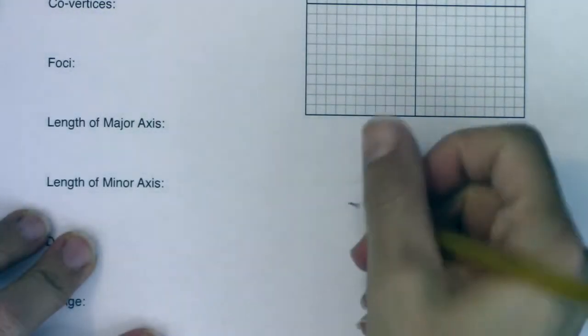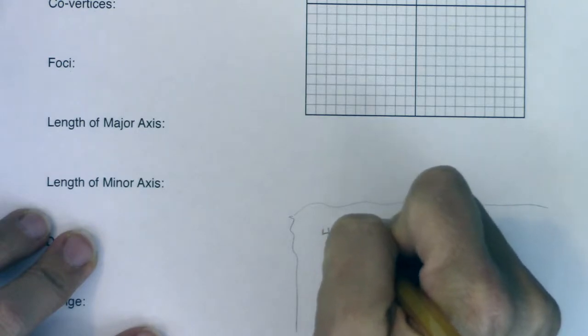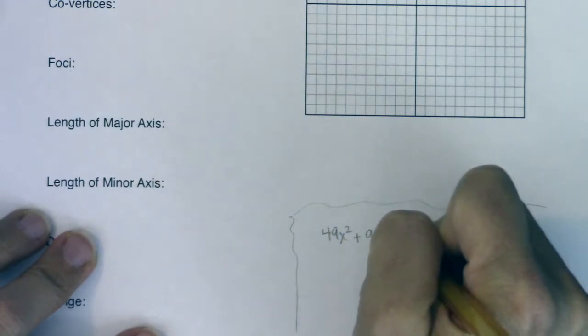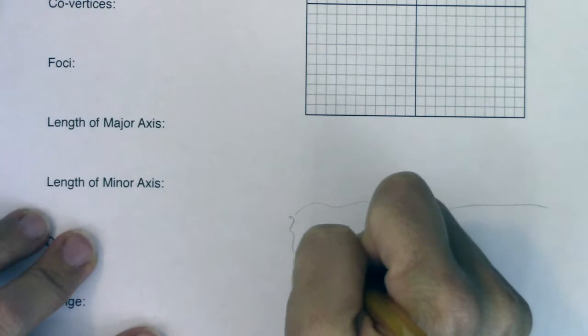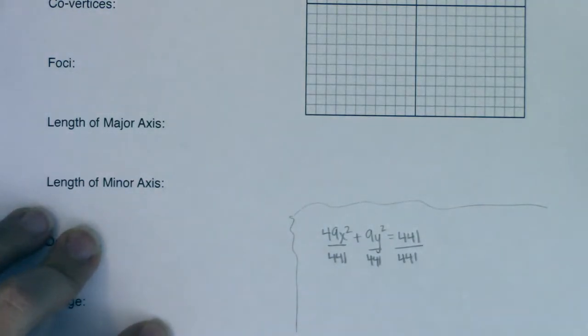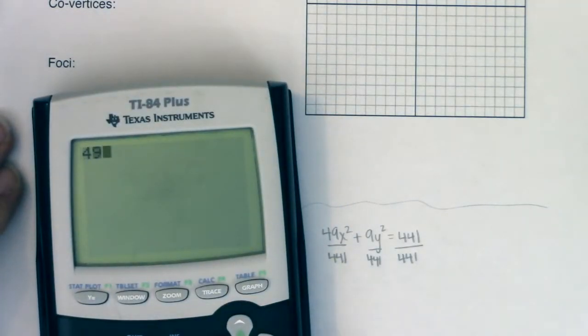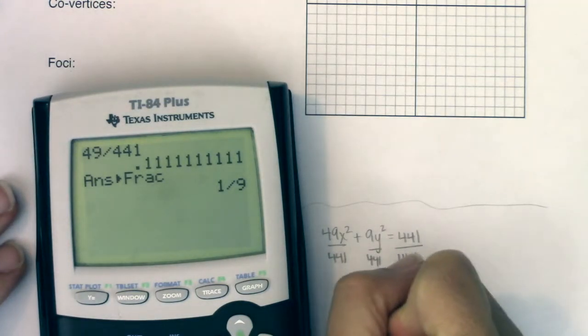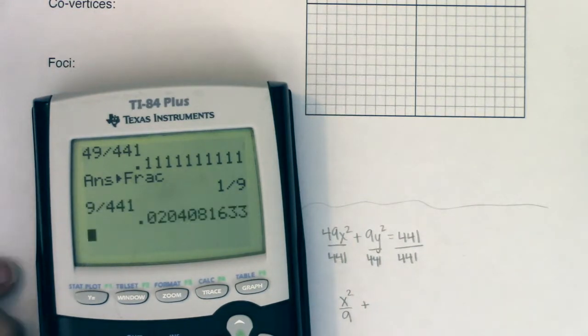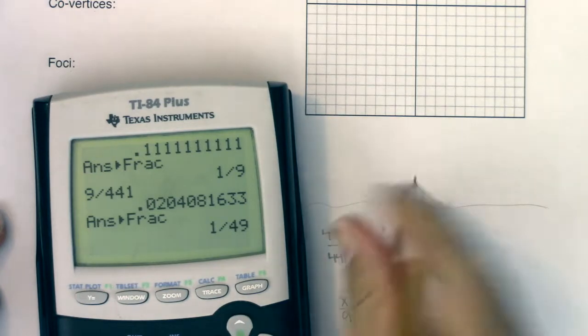So before we get going on any of that, let's go ahead and start manipulating this equation. I want to take my ellipse as given to me and divide by 441. I'm going to divide every term by 441 so that I can get my equation into standard form. Now if I'm not sure about 49 over 441, take it to your calculator. If I turn it into a fraction, I see it's 1/9, so this is going to become x squared over 9. Let's do 9 divided by 441 and that's going to be 1 over 49 and that's going to be equal to 1.